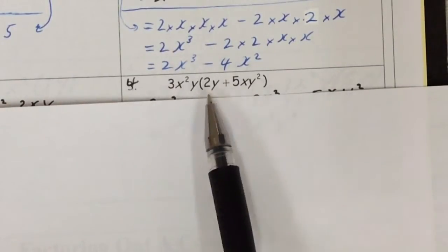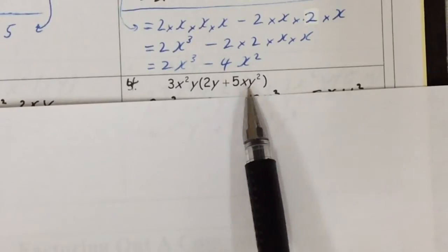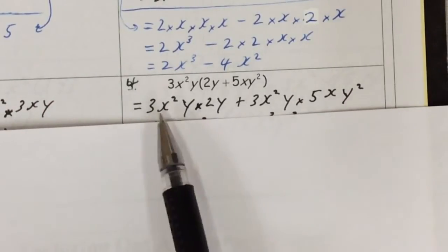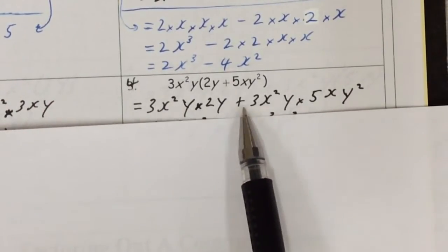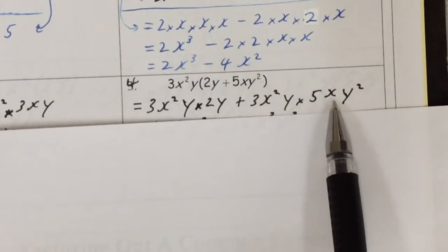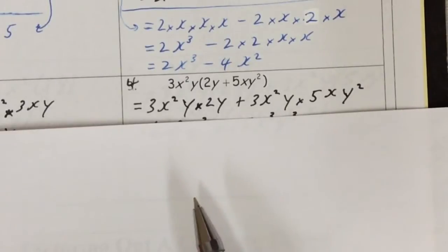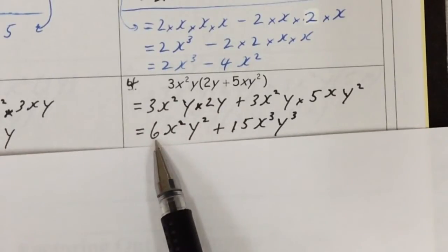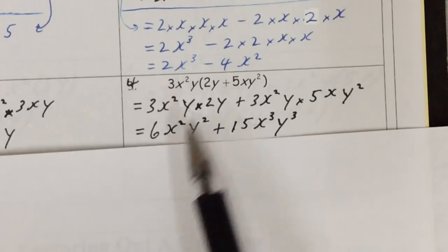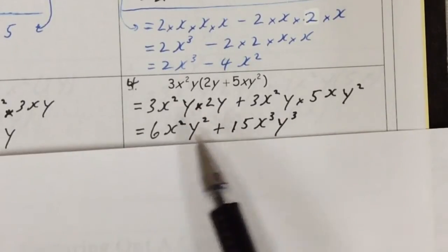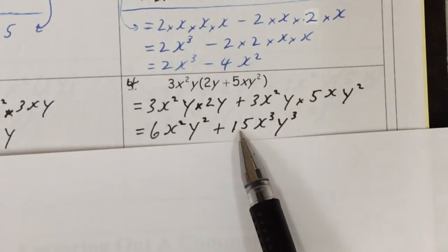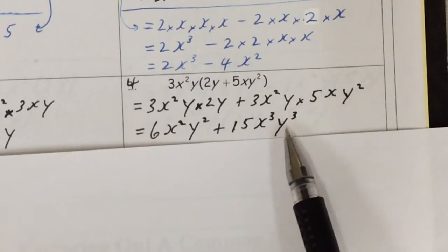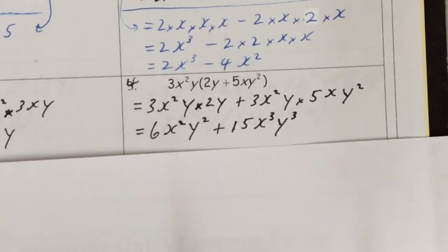Example 4: x squared y times 2y plus 5xy squared. You're going to multiply this whole thing in — it gets a little more complicated, but same idea. So: 3x squared y times 2y, plus 3x squared y times 5x squared y squared. The first part: 3 times 2 is 6, x squared stays, y times y is y squared. Then 3 times 5 is 15, x squared times x is x cubed, y times y squared is y cubed — you add the exponents.